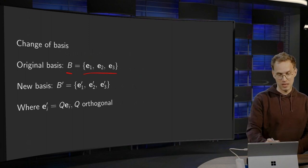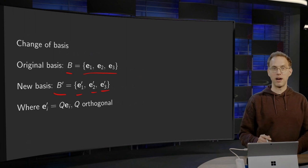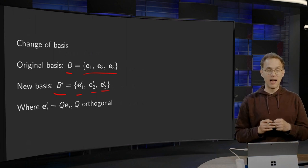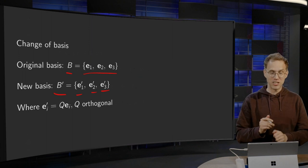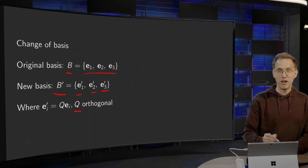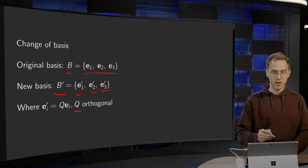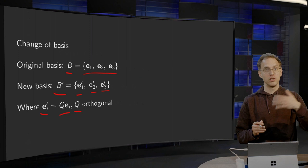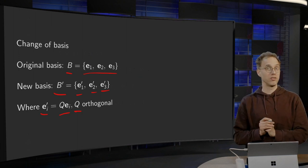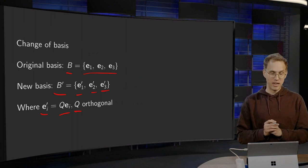And a new basis B' = {E1', E2', E3'}, a different basis. And then we want that this new basis, this different basis, is given via an orthogonal tensor Q.